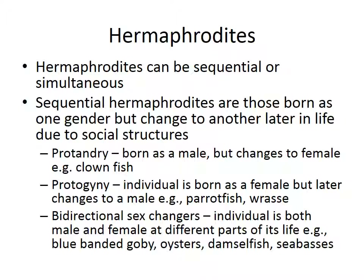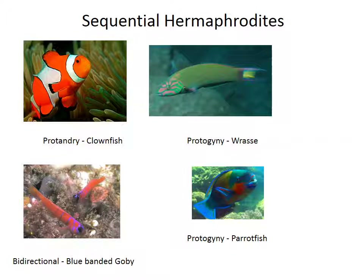Hermaphrodites can be sequential or simultaneous. Sequential hermaphrodites are born as one gender but change to another later in life due to social structures. There are three types: protandry — born male, change to female, example clownfish; protogyny — born female, change to male, example parrotfish or wrasses; and bidirectional sex changes — born either way and changing back and forth, like the blue-banded goby, some oysters, damselfish, and sea basses.